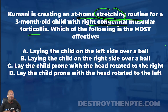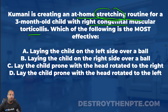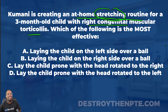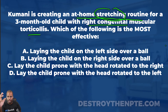The question asks which of the following is the most effective. Let me go through those answer choices again: A is laying the child on the left side over a ball; B is laying the child on the right side over a ball; C is lay the child prone with the head rotated to the right; and D is lay the child prone with the head rotated to the left. Let's break these down one by one. For those of you in the gym, you can grab a bench or a therapy ball and try this for yourself to see how it feels.